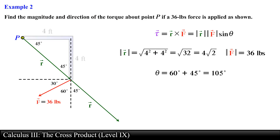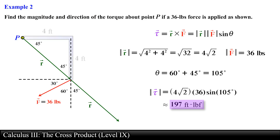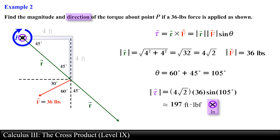Substituting all values into the geometric definition of the cross product and approximating, we obtain 197 foot-pounds for the magnitude of the torque. The direction of the torque is determined by using the right-hand rule: the applied force causes the shape to rotate clockwise, so the torque vector points into the board, indicated by an X.